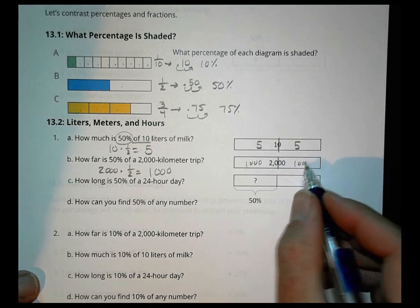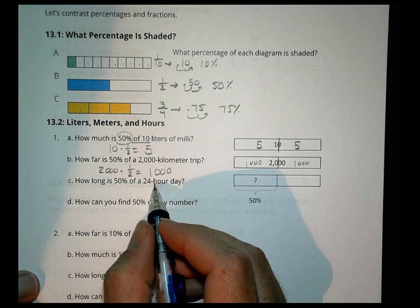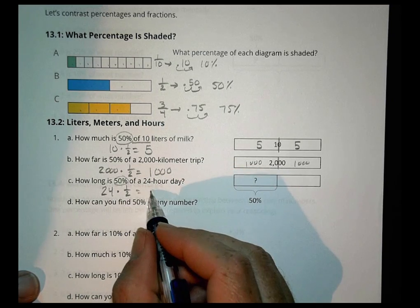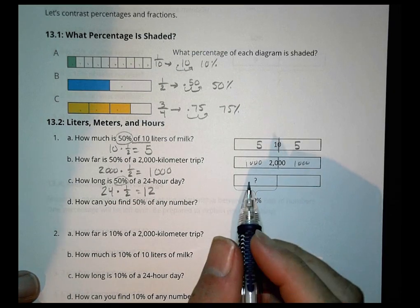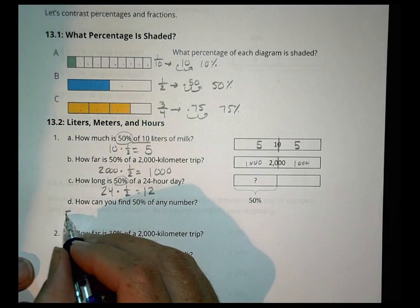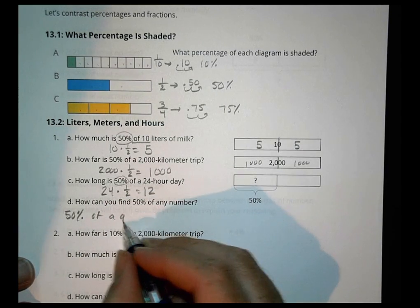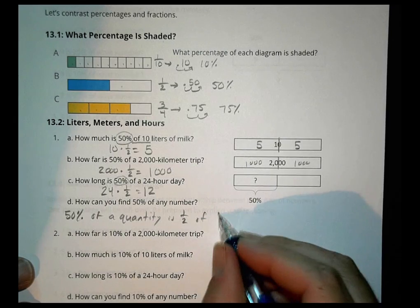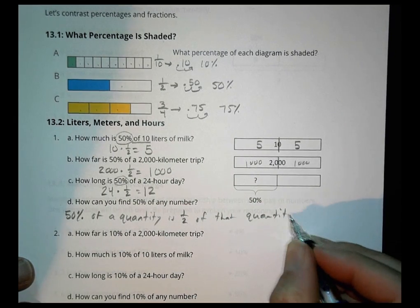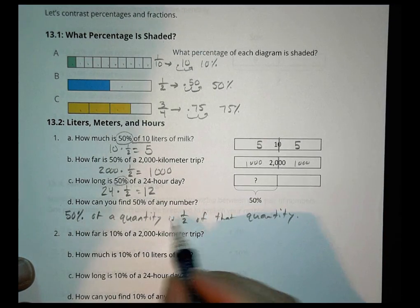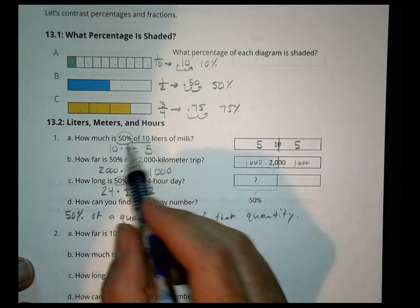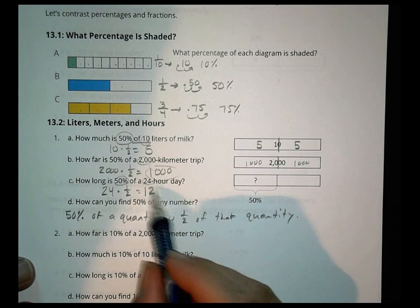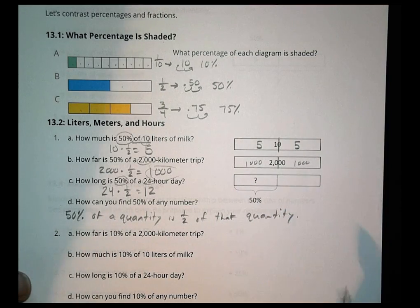And how long is 50% of a 24-hour day? It's 24 hours, and I'm dividing it in half to get 50%, and 50% of 24 is 12. So how can you find 50% of any number? We would say that 50% of a quantity is half of that quantity. So 50% of any number is half of that number.